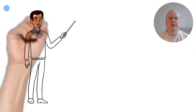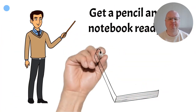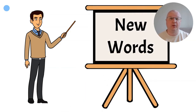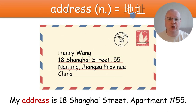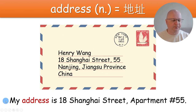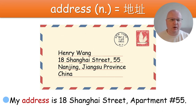New vocabulary words. This part helps the teacher tell the students to have their notebooks ready because they're supposed to write down every single new word they see. Let's go through the new vocabulary words. The first word is 'address'. As you can see here, this is the part of speech and here's the translation into Chinese because I teach in China. If you want to change Chinese into your language, it's very easy to do in the PowerPoint. And this is the sentence — I use this word in a sentence: My address is 18 Shanghai Street, apartment number 55. All these words are from the story.